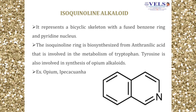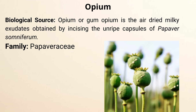The next class of alkaloid is isoquinoline alkaloid, which consists of two rings: a benzene ring fused with a pyridine ring. The drugs which contain isoquinoline alkaloid are opium and ipecacuanha. Opium is an unorganized drug obtained as a milky exudate by incising the unripe capsule of Papaver somniferum, belonging to the family Papaveraceae.